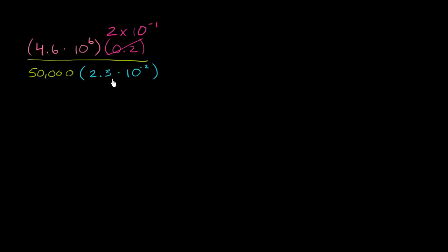In the denominator, the blue part is written in scientific notation, but the green part is not. We can easily write it as 5 ten-thousands. Ten thousand is 10 to the fourth, so this is the same thing as 5 times 10 to the fourth power. You can see it has 4 zeros.